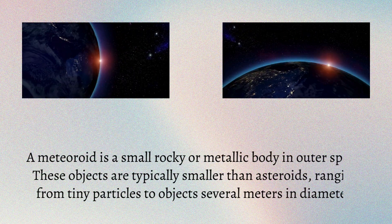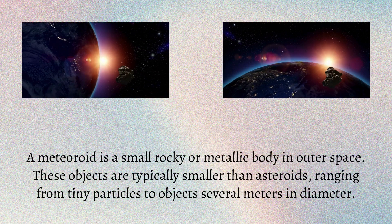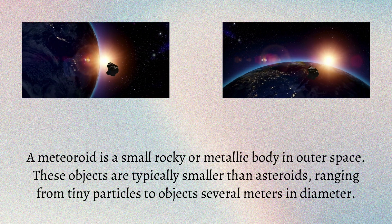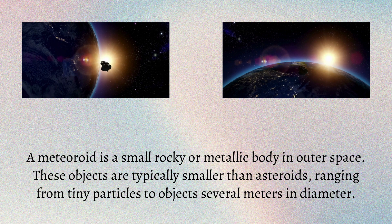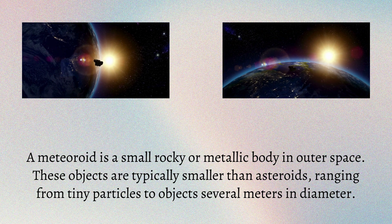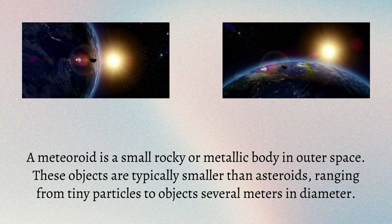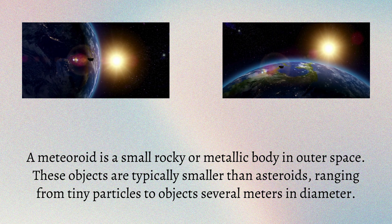A meteoroid is a small rocky or metallic body in outer space. These objects are typically smaller than asteroids, ranging from tiny particles to objects several meters in diameter.